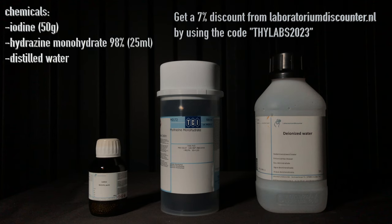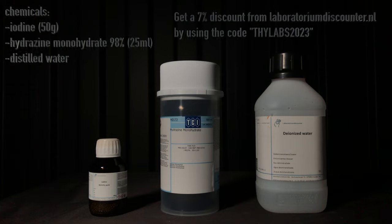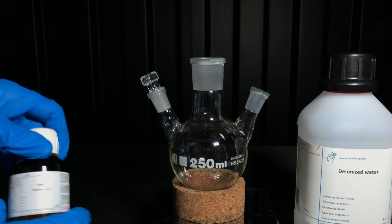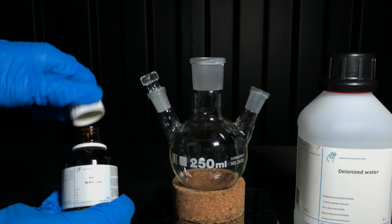For the preparation you will need 50g of iodine, 25ml of hydrazine monohydrate, and distilled water. We began by adding 50g of elemental iodine to a round bottom flask.